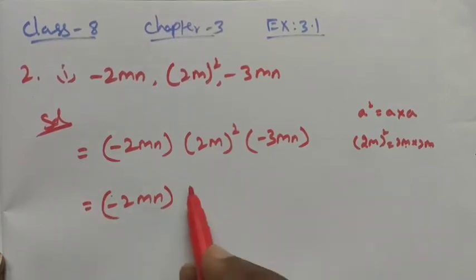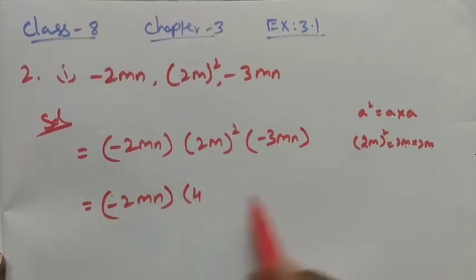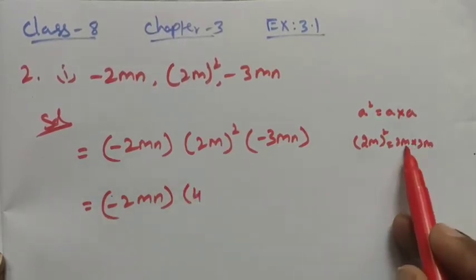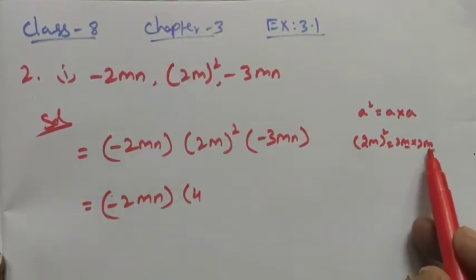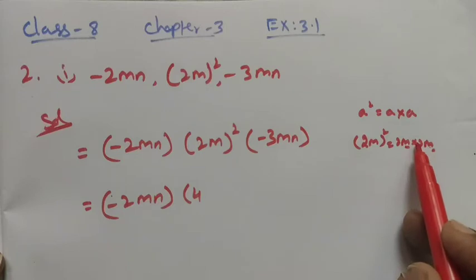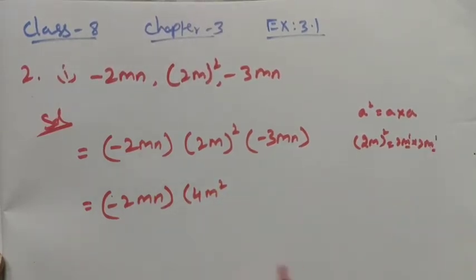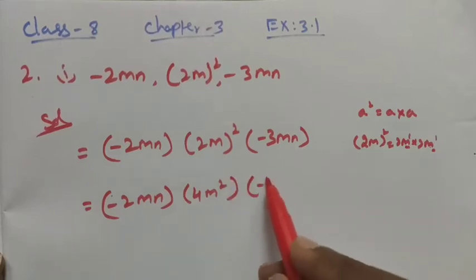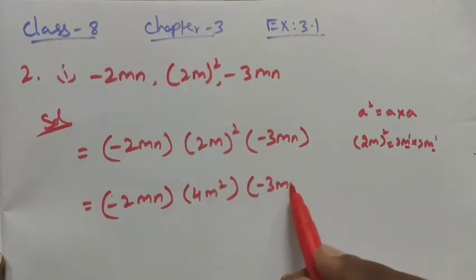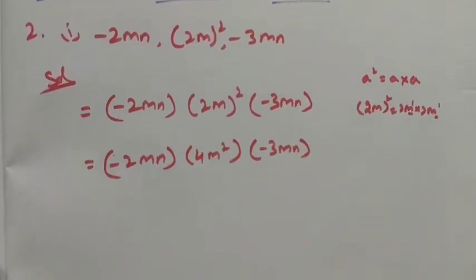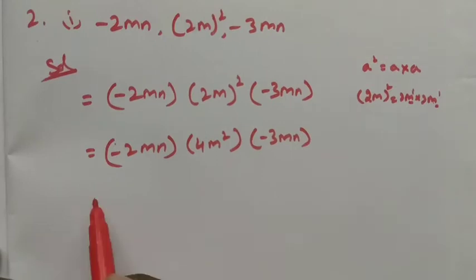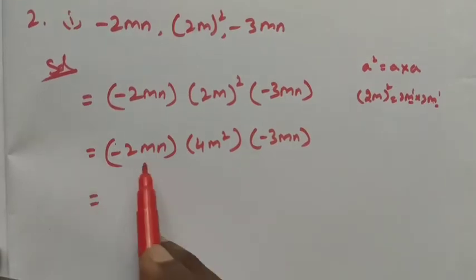When the bases are equal in multiplication, we add the powers. So m¹ into m¹ gives m² by the law of exponents — 1 plus 1 is 2. Now we have: minus 2mn into 4m² into minus 3mn.